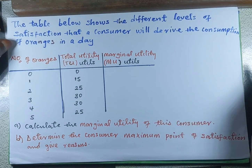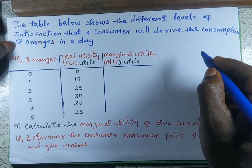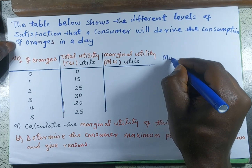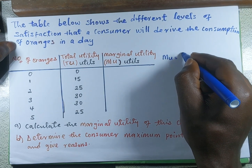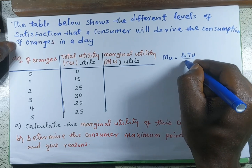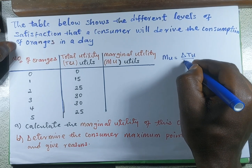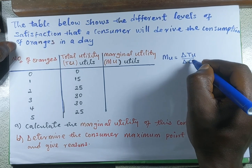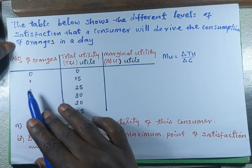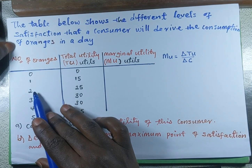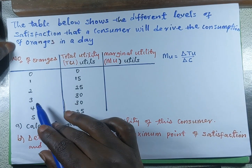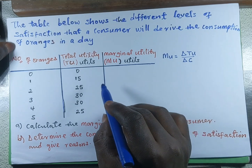To calculate the marginal utility, we know that marginal utility is equal to change in total utility over change in consumption — that is, change in the units consumed. So that is how we are going to calculate the marginal utility.